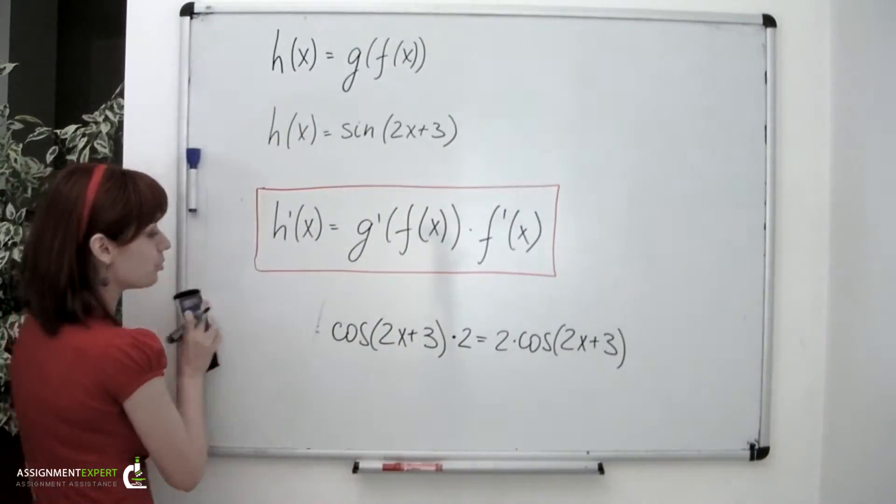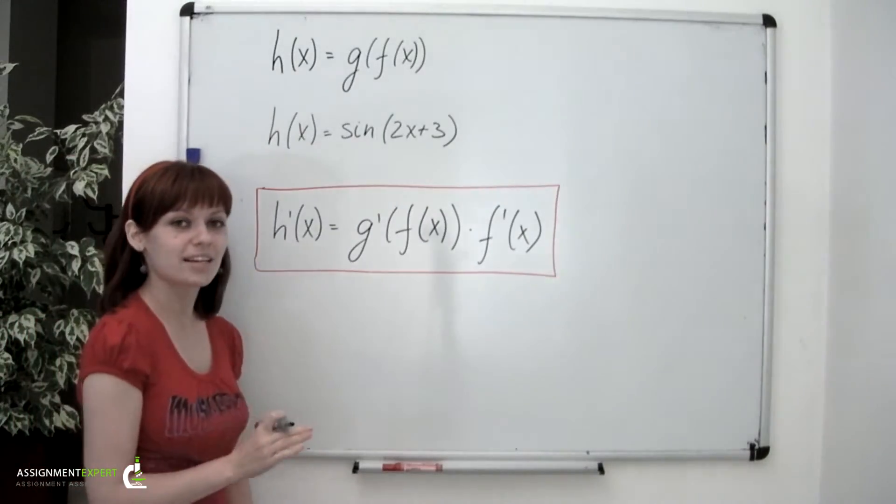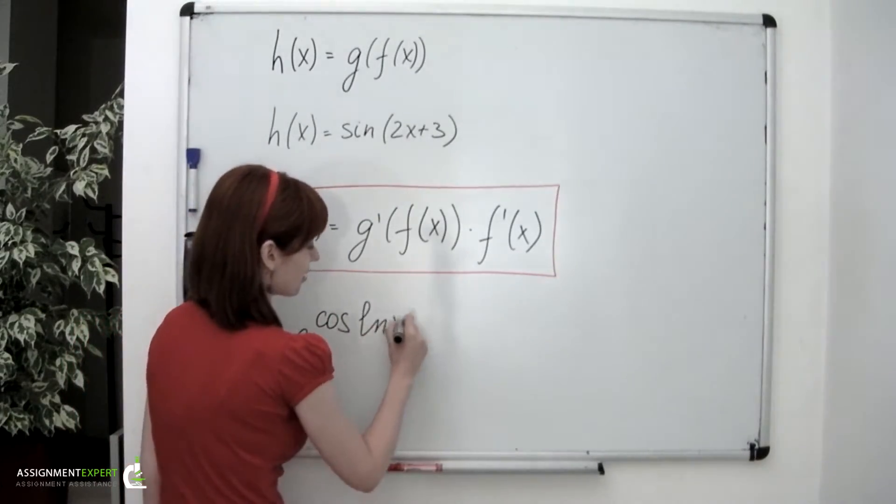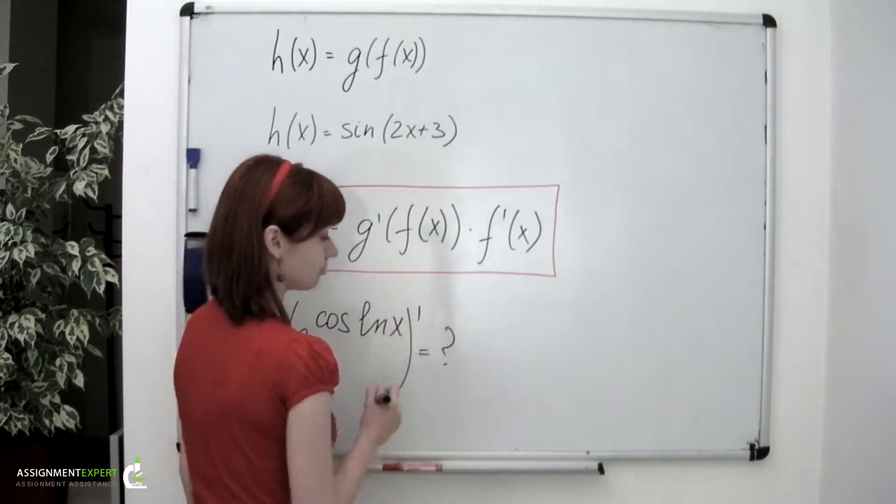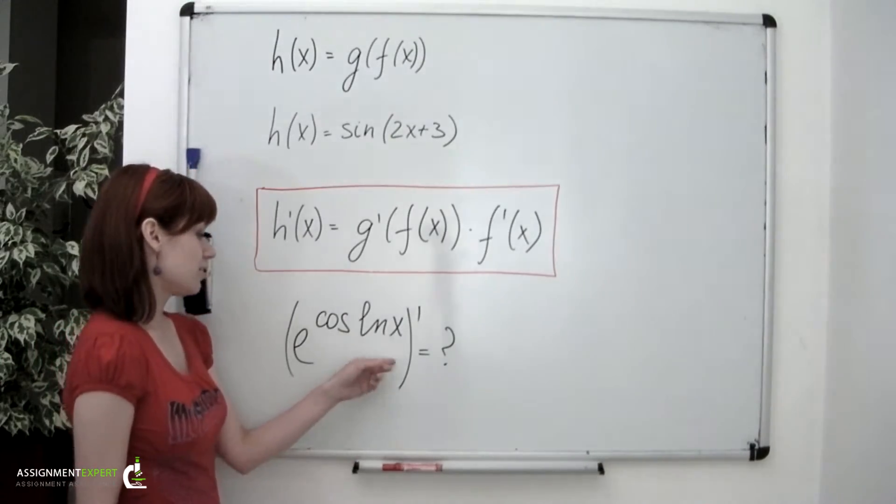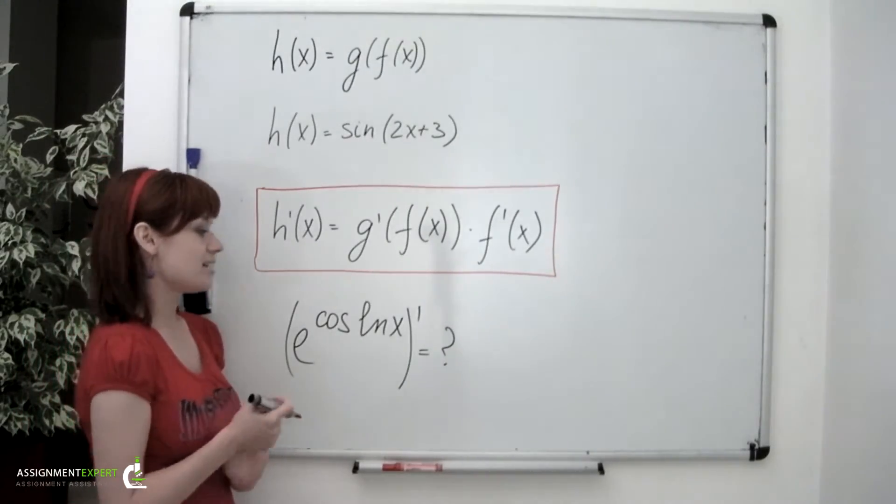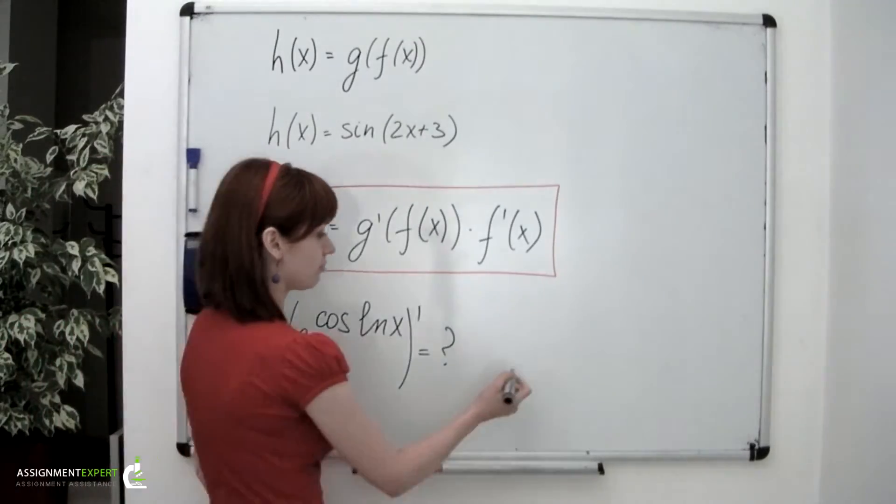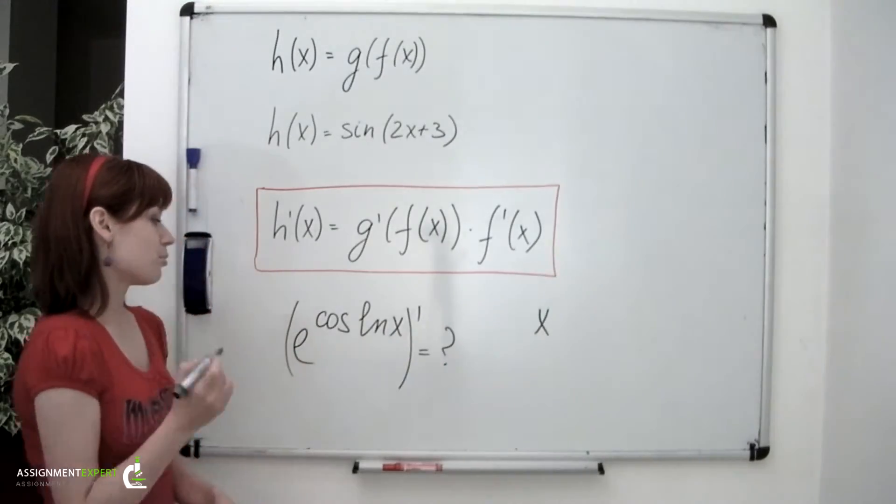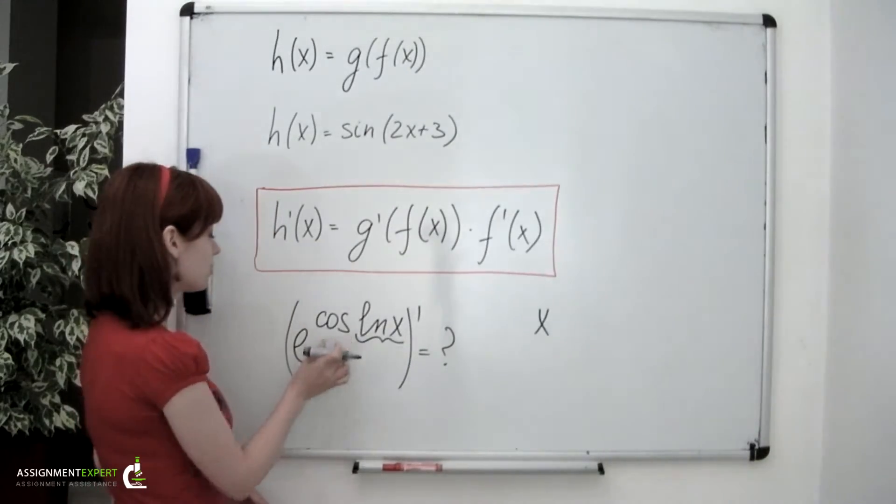Now we've considered the case when exactly one function was the inside function and one was the outside function. But what if we needed to calculate a derivative of, say, e taken to the power of cos of ln of x. Obviously this is no longer the case of composition of two functions. But that doesn't mean we can't use chain rule to find its derivative. On the contrary we can. And the basic idea to start with is pretty much the same. So we arbitrarily pick value for x and pretend that we want to calculate this given expression at this certain point. So obviously the first thing we're going to calculate here will be this logarithm. And the next in line will be the cos and the last one will be this exponential.